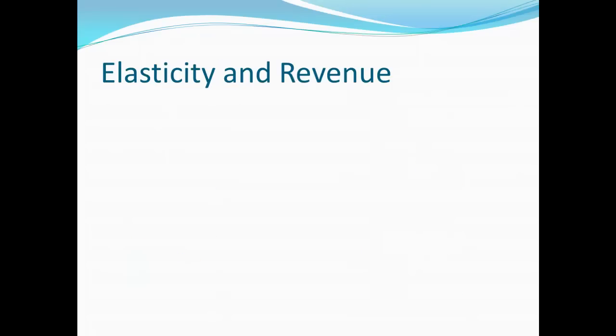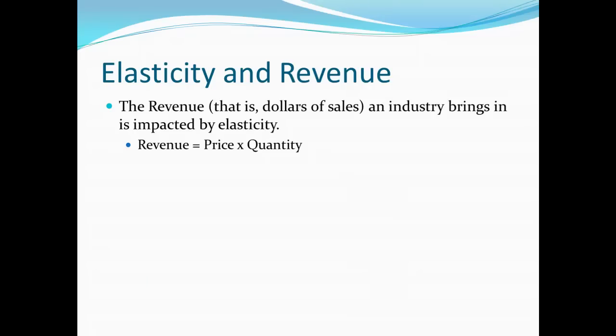There's also a relationship between elasticity and revenue. Now, revenue we calculate as being price times quantity. Really, it's just a word that we use for, say, the dollar value of sales in a particular industry. So the revenue of an industry is the price of their good multiplied by the quantity of the good that gets sold. This is also true if you look at an individual business. The prices that they charge multiplied by the quantity that they end up selling, and you end up with the revenue for that business.